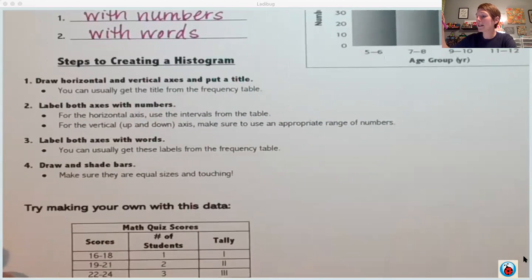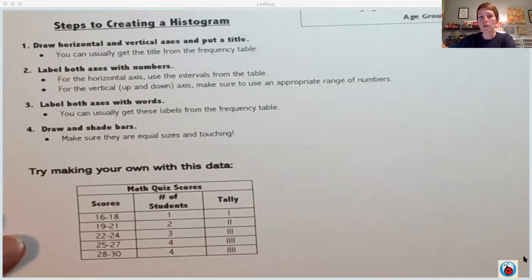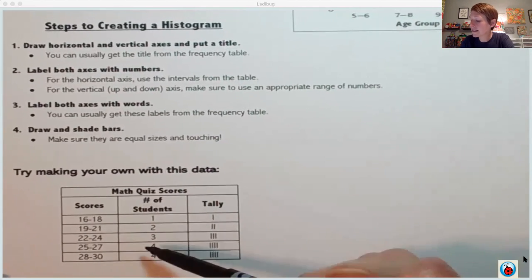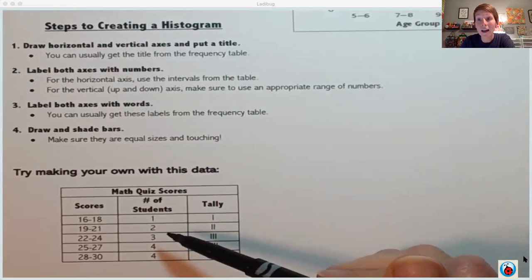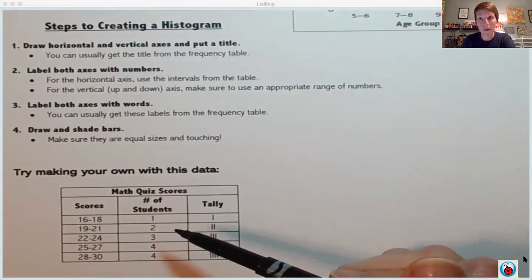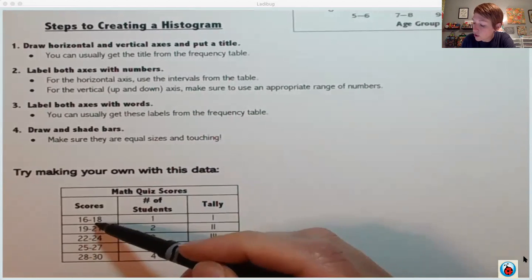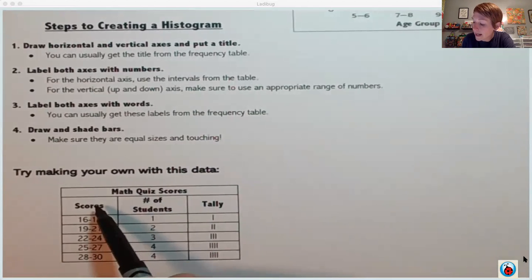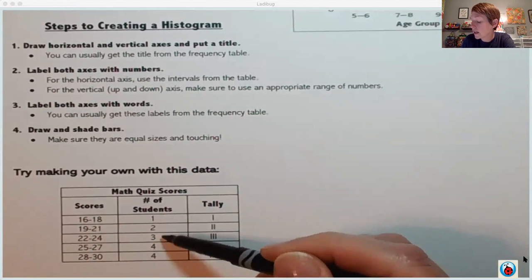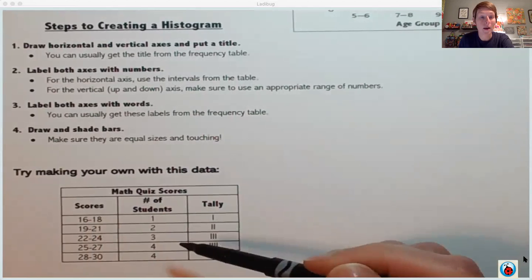You're usually going to have a frequency table or a little chart like this one at the bottom that contains your data. You can get a lot of information from your histogram from this table. I can get my title, I get my intervals, I get my words that I can use to label my axes, and then of course I get my data. These numbers tell me where my bars should stop.